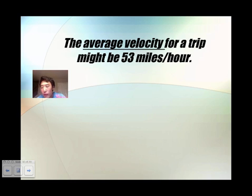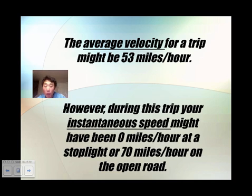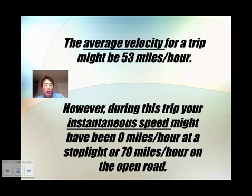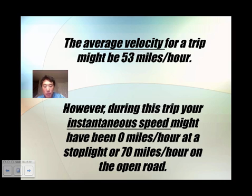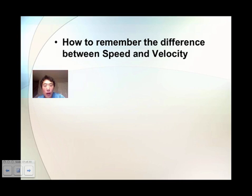Here are key points: the average velocity for a trip might be 53 miles per hour, but during that entire trip you could have been speeding or completely stopped. So your instantaneous speed might be zero or 70, but the average, average, average would equal 53 miles per hour.